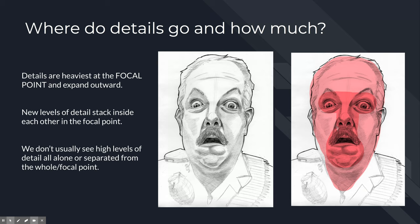In portraiture, the first thing we look at is the eyes, followed by nose and mouth, then everything outside is secondary. The vast bulk of detail goes to eyes, nose, mouth — and inside the eyes there's even more detail. In the iris, some areas have heavy detail, some medium, some almost none. You work in threes with your details. In heavy areas, get detail within detail — stack them on top of each other.